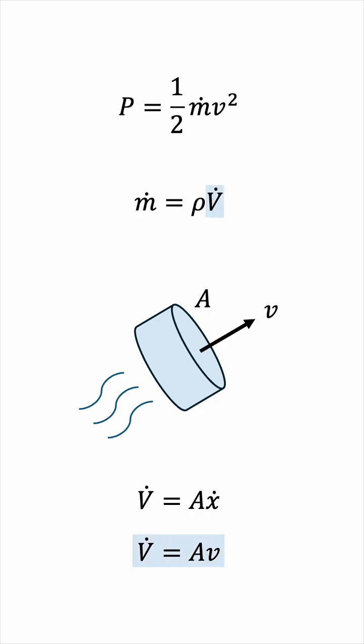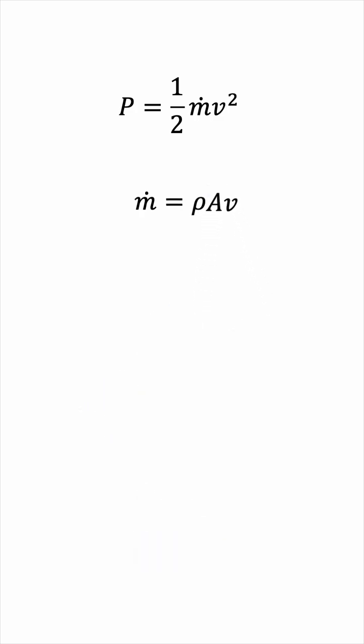Substituting this, we get m dot is equal to rho A v. And plugging this back into the power equation, we get that the power is half rho A v cubed.